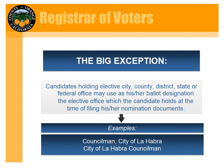The big exception: candidates that hold elective city, county, district, state, or federal office may use that elective office as their ballot designation at the time of filing. An example is 'City Councilman, City of La Habra' or 'City of La Habra Councilman.' They can use this elective title whether running for the same office or a different one. For example, if Jane Smith was the elected city attorney of Huntington Beach and wanted to run for city council instead, she could still use 'City Attorney, City of Huntington Beach' as an accurate ballot designation.